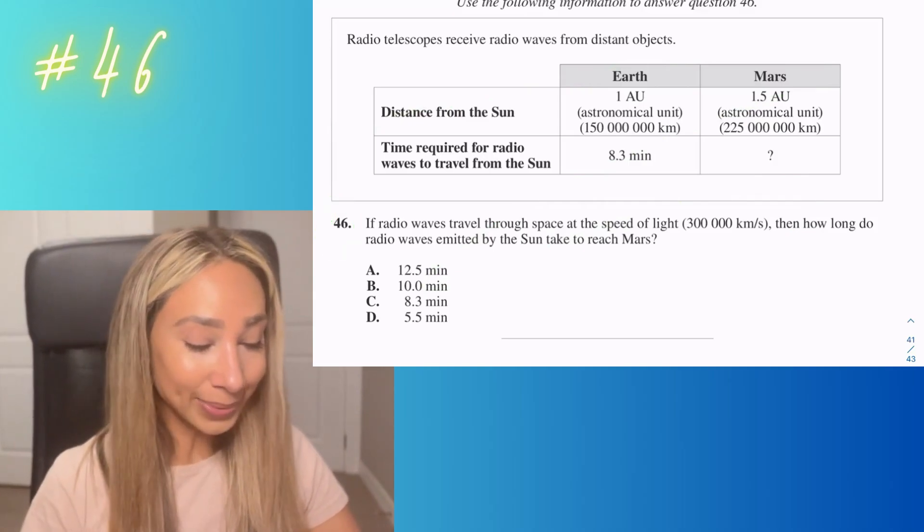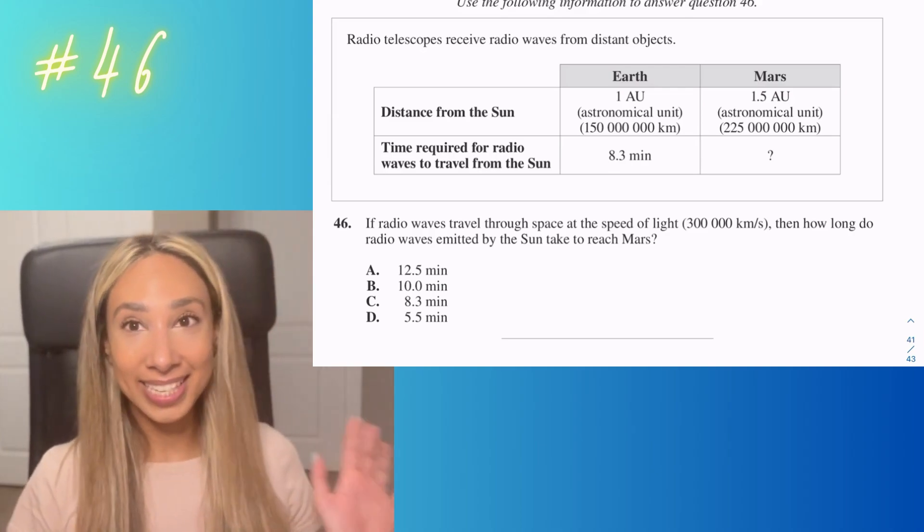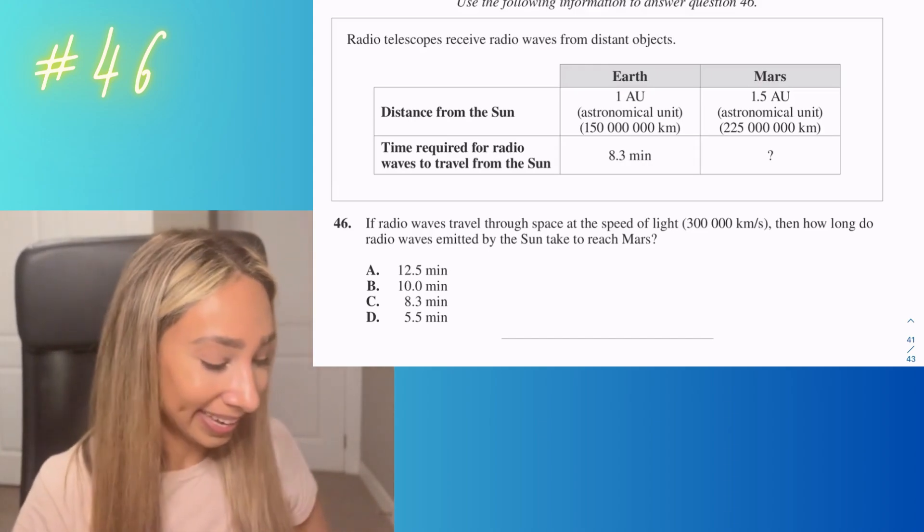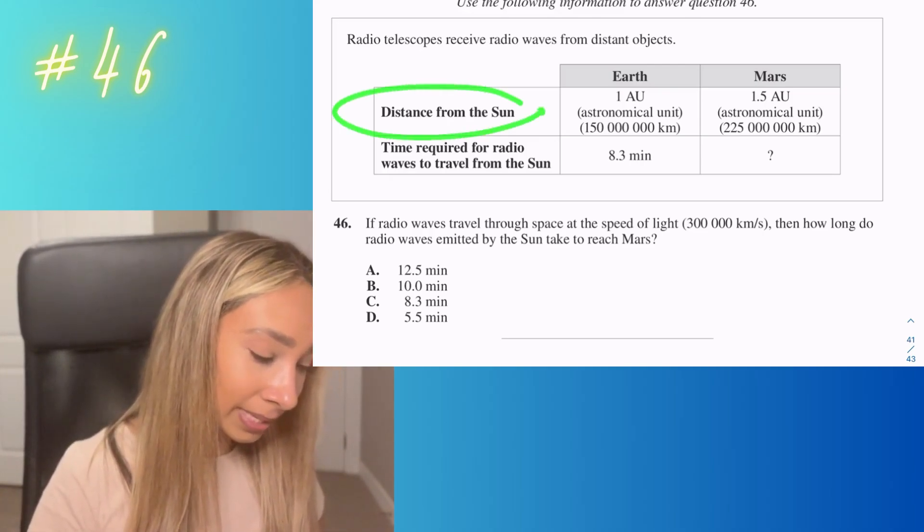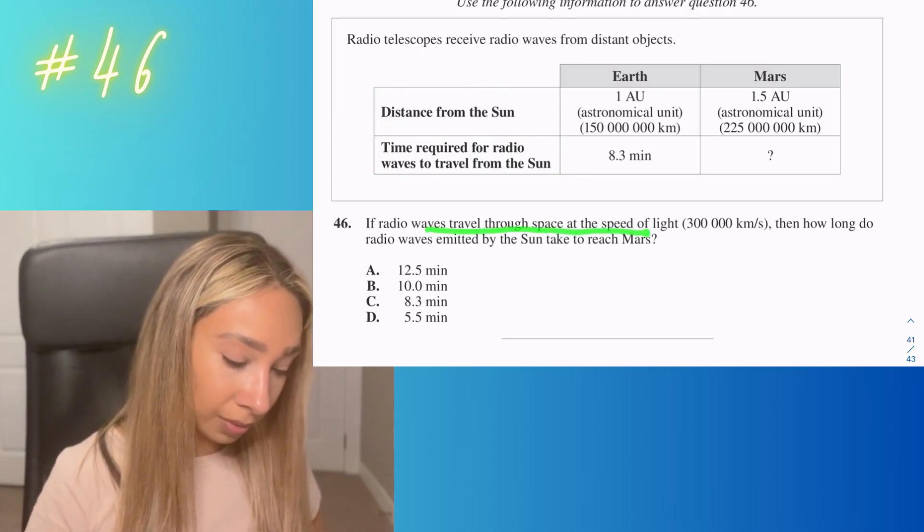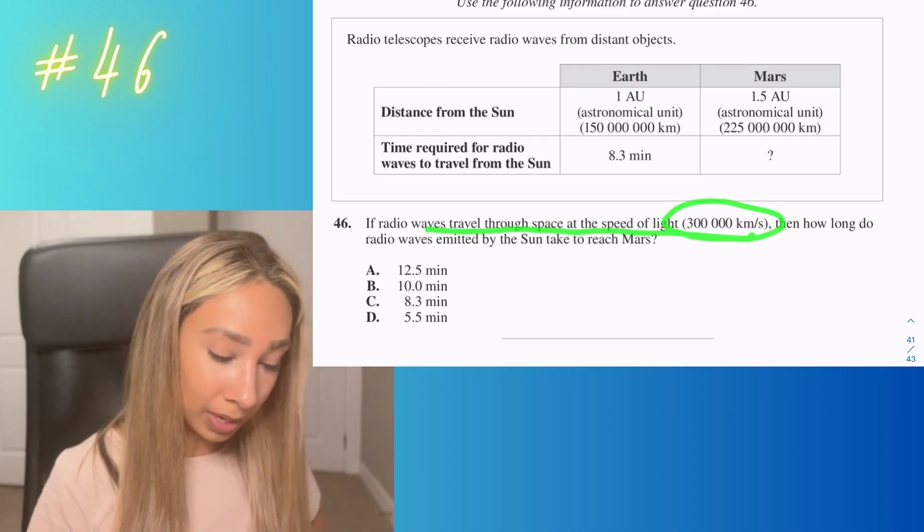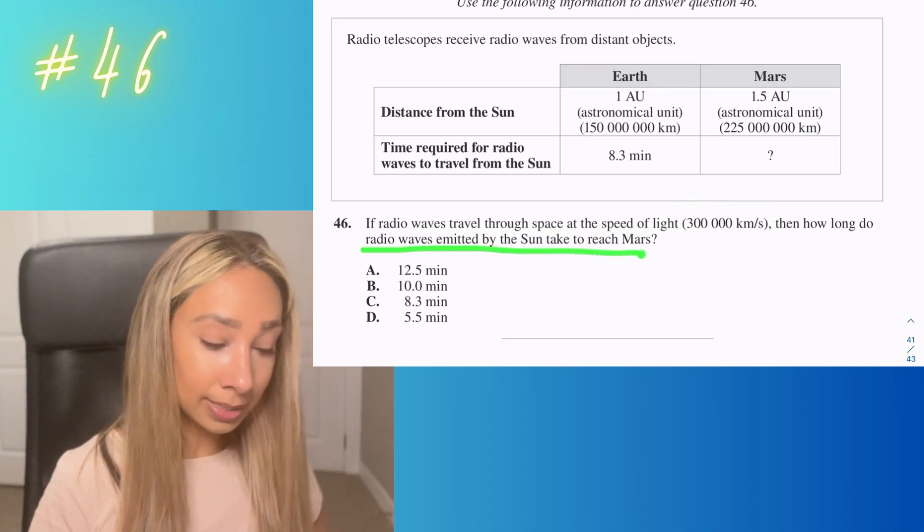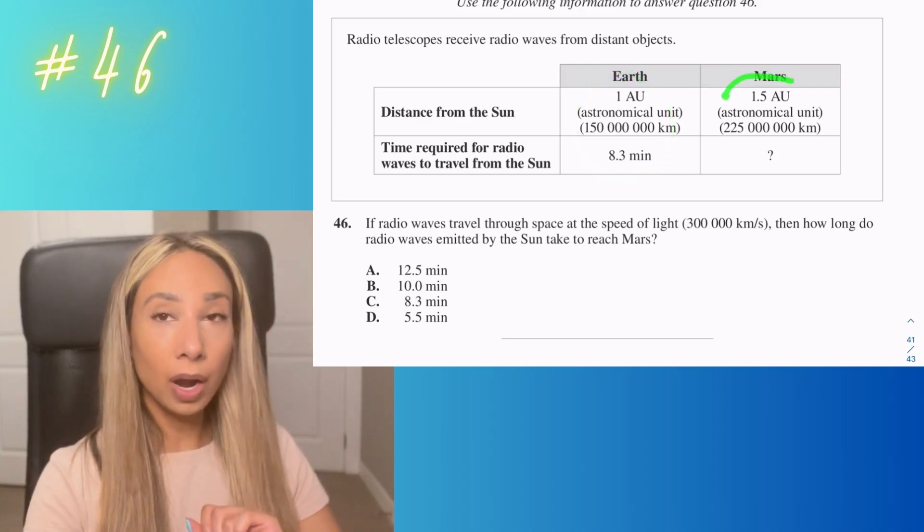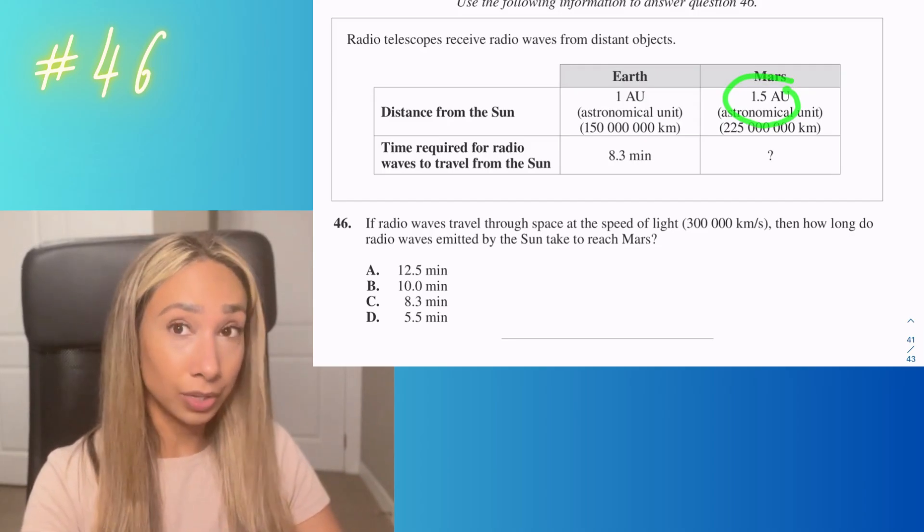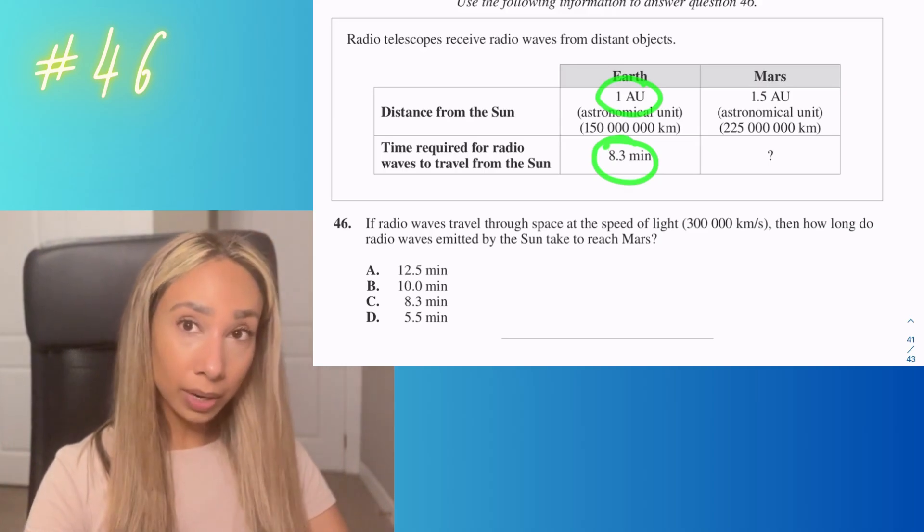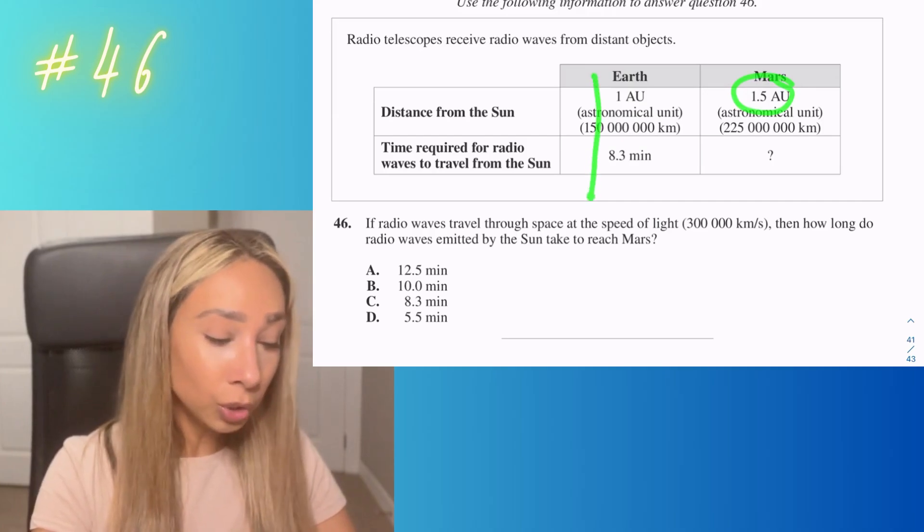Number 46. With this one we're looking at numbers and math. It's supposed to be simpler than your math PAT. We've got the distance from the Sun and time required for radio waves to travel from the Sun. If radio waves travel through space at this many kilometers per hour, how long do radio waves emitted by the Sun take to reach Mars? We're comparing one astronomical unit of Earth and figuring out what that would be for 1.5 astronomical units for Mars.